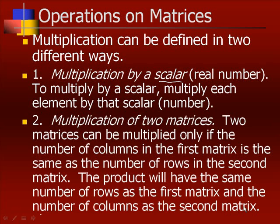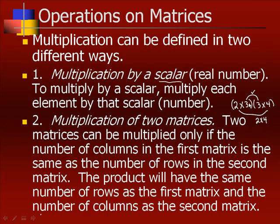The second type is multiplication of two matrices. Two matrices can be multiplied only if the number of columns in the first matrix is the same as the number of rows in the second matrix. For example, if you have a 2 by 3 matrix multiplied by a 3 by 4 matrix, the two inner numbers have to match, and the answer has the dimensions of the two outer numbers. As long as the two middle numbers match, you are good to multiply.